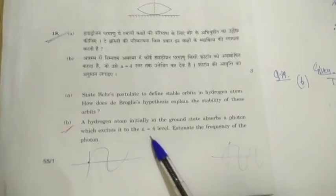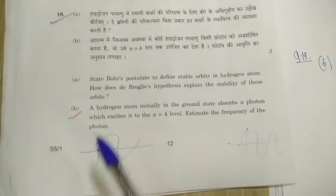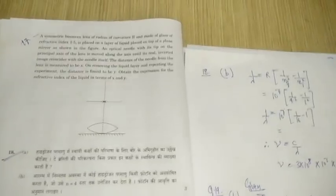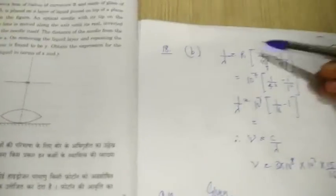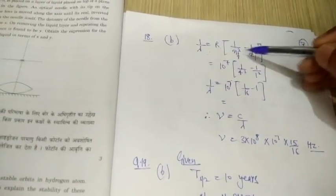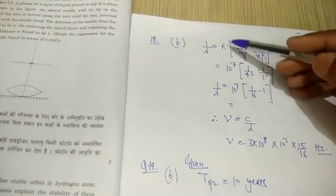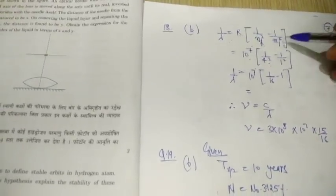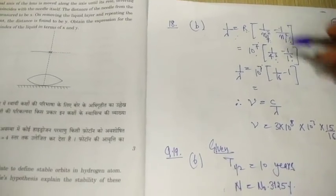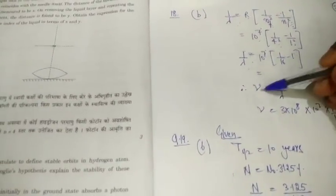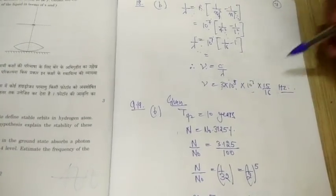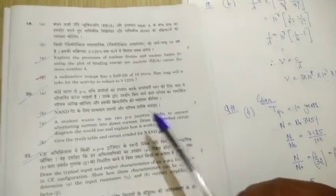Question 18B: a hydrogen atom initially in the ground state absorbs a photon and is excited to n = 4. Estimate the frequency of the photon. Using the Rydberg formula: 1/λ = R(1/n_i² − 1/n_f²), with R = 10⁷ m⁻¹, n_i = 1, and n_f = 4. Calculate 1/λ, then use frequency f = c/λ, with c = 3 × 10⁸ m/s, to get the frequency in hertz.